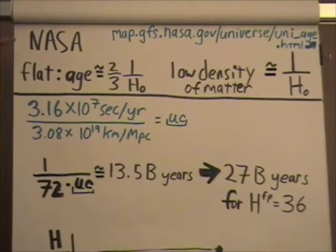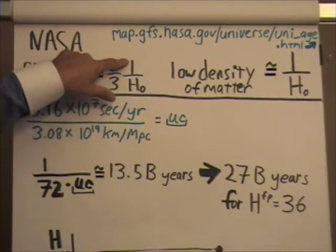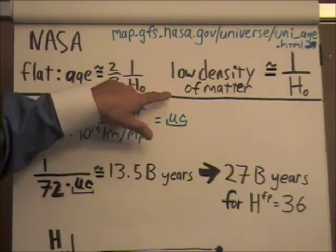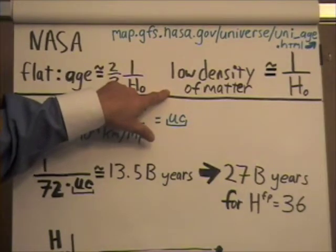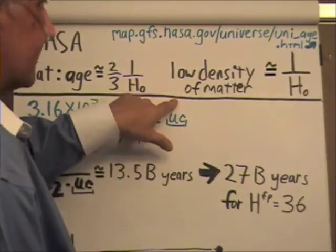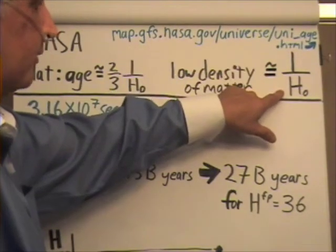Well, here's what NASA has to say: that if the universe is flat the age of the universe would be about two thirds of one over the Hubble constant. But if the universe is comprised of a low density of matter, which is what we think it is, then yes the age of the universe can be estimated as being about one over the Hubble constant.